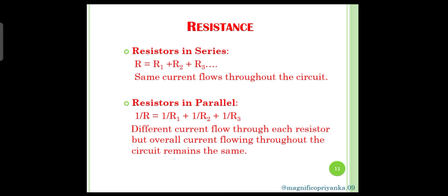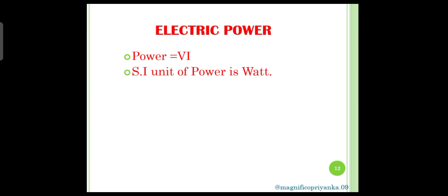Now, resistance in series. In this type of combination, different resistors are joined end to end. This is done to increase the resistance of the circuit. Next is resistance in parallel. Here, different resistors are connected between two points parallel to each other to decrease the net resistance of the circuit.